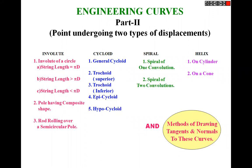In this part we will cover: how to draw the involute on a circle, how to draw the cycloid on a circle. Different types of cycloid are not included in the first-year engineering syllabus. For spiral, there is spiral of one convolution and spiral of two convolutions. For helix, there is helix on cylinder and on cone.